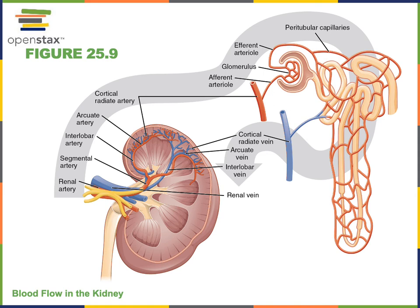The remaining blood will continue flowing out of the glomerulus into the efferent arteriole. That's an unusual situation where we have two arterioles connected to a capillary bed — the afferent arteriole carries blood into the glomerulus, and the efferent arteriole carries blood out of the glomerulus. Then the efferent arteriole carries blood into another capillary bed known as the peritubular capillaries, which surround the tubules of the nephrons.